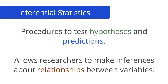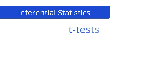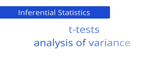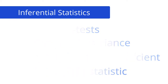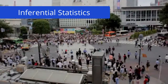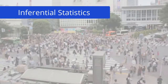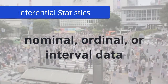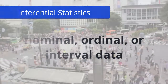Inferential statistics are procedures to test hypotheses and predictions. They allow researchers to make inferences about relationships between variables based on the data collected. Common procedures include t-tests, analysis of variance, the Pearson correlation coefficient, and the chi-square statistic. It's important to understand how the size of a sample and its randomness affect the choice of statistical procedure, as well as whether you have nominal, ordinal, or interval data when considering data analysis.